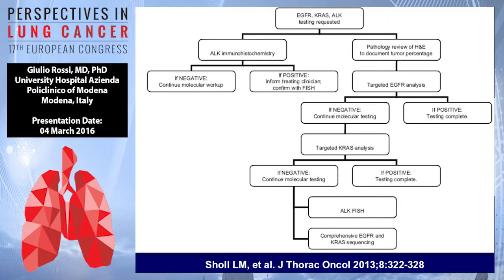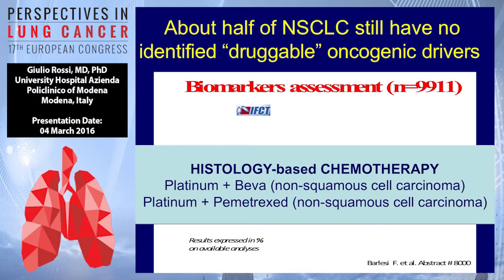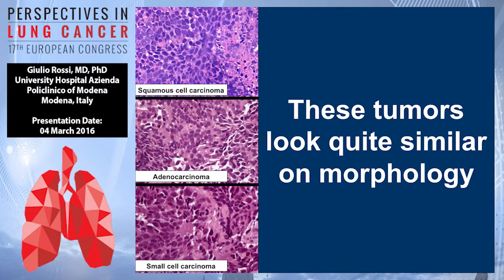We have to remember that about half of cases of non-small cell lung cancer are without a driver mutation. The first problem is to define the histotype in these cases, particularly because, as previously underlined by John, histology still matters — particularly if you choose some platinum-based chemotherapy with bevacizumab or pemetrexed. These tumors may look quite similar on morphology, sometimes on small biopsy.